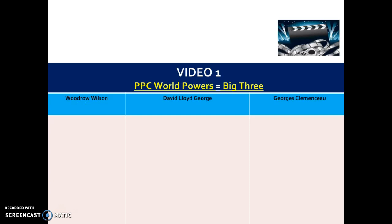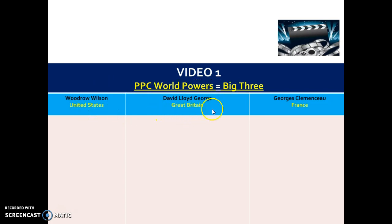Out of all the countries invited to the PPC, the world power countries were the most powerful. Out of those, three countries known as the Big Three pretty much dominated the PPC: the United States, led by President Woodrow Wilson; Great Britain, led by Prime Minister David Lloyd George; and France, led by President Georges Clemenceau. These three men made most of the decisions at the Paris Peace Conference.